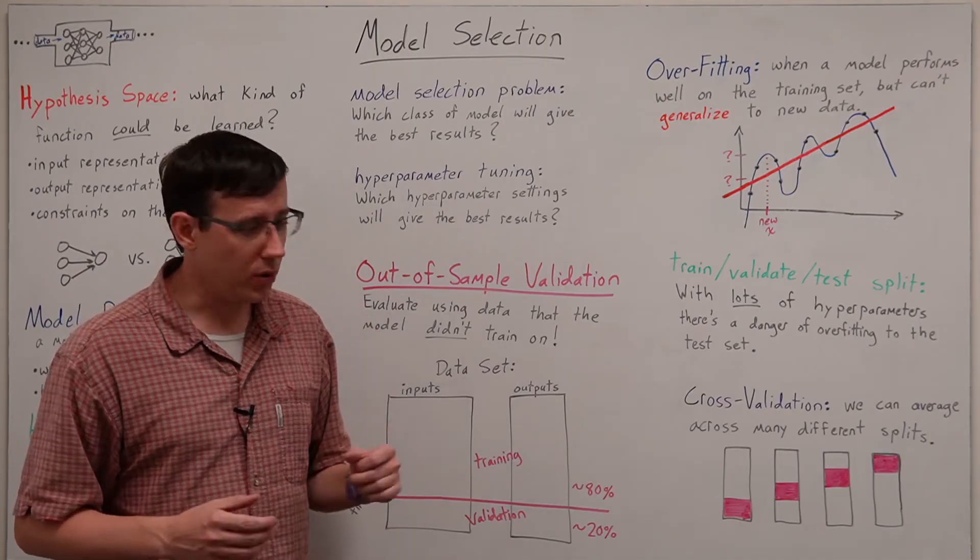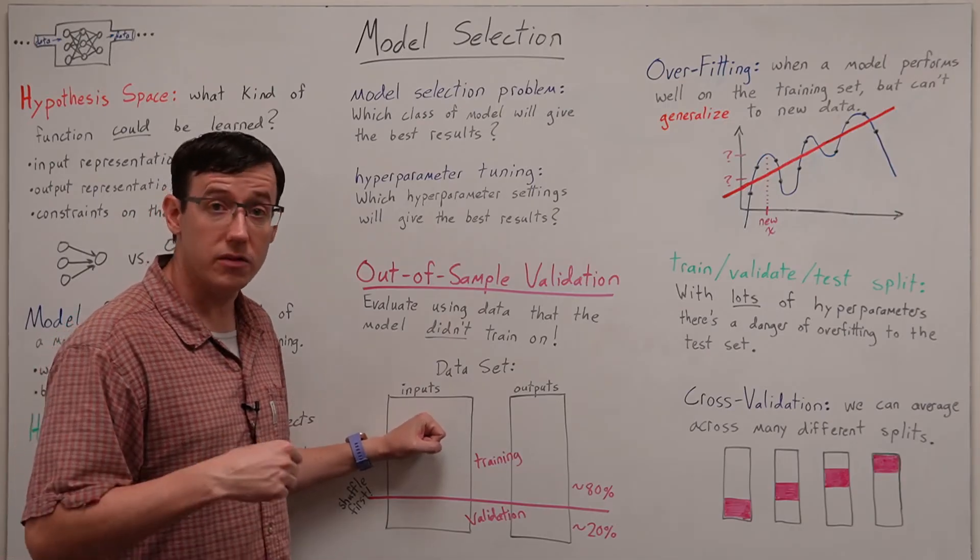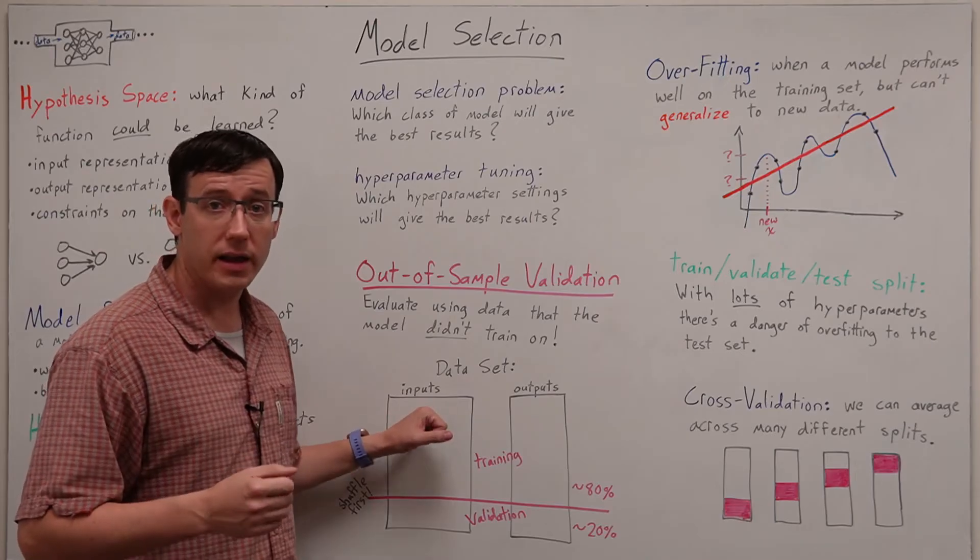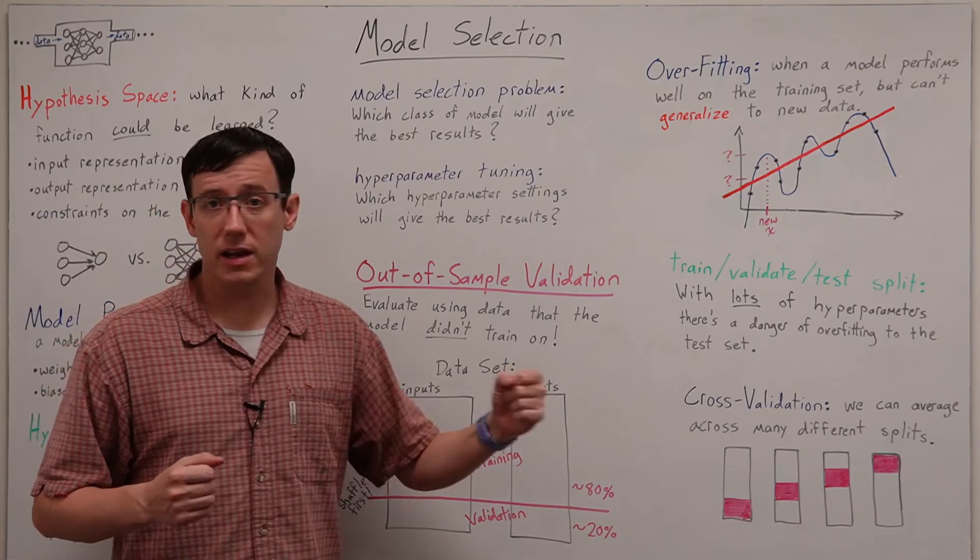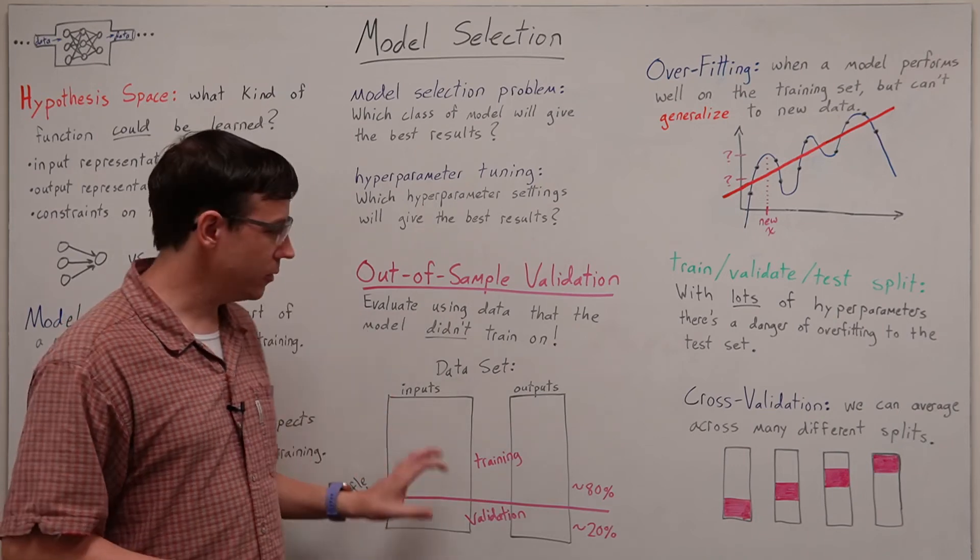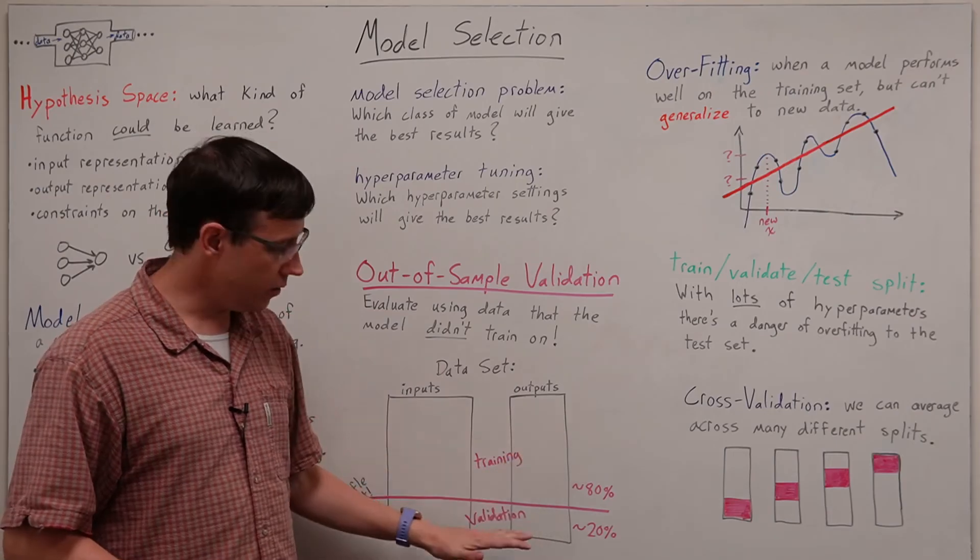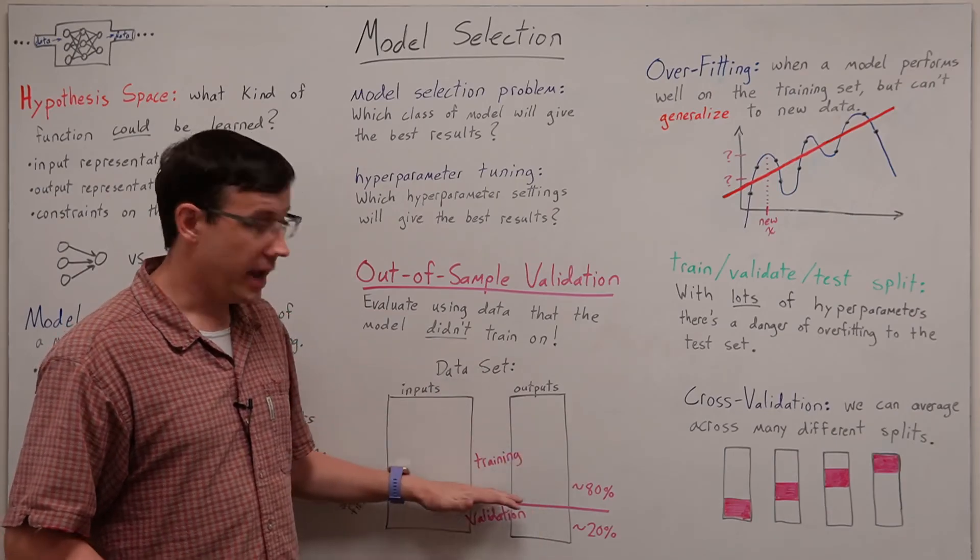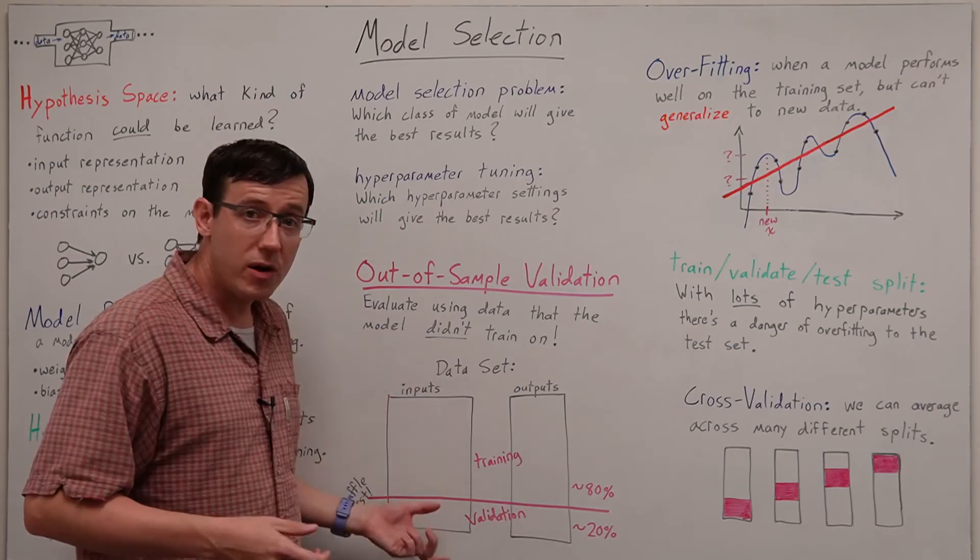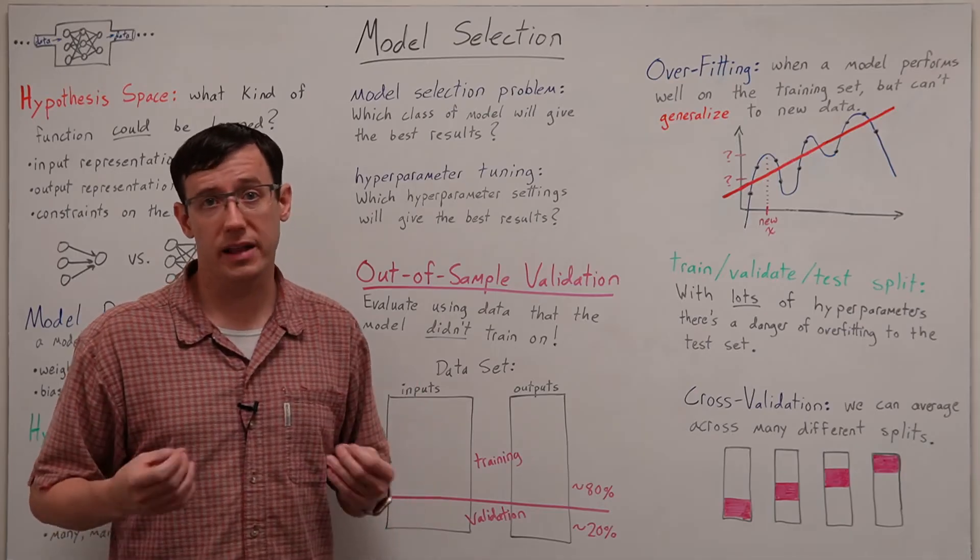And the key idea and perhaps the most important concept in all of machine learning is that we can answer these questions experimentally by separating a training set from a test set. If we divide our data set including both the input examples and the output examples into one portion that we will train on and a separate portion that we will not train on then we can use that portion that we held back for out of sample validation.